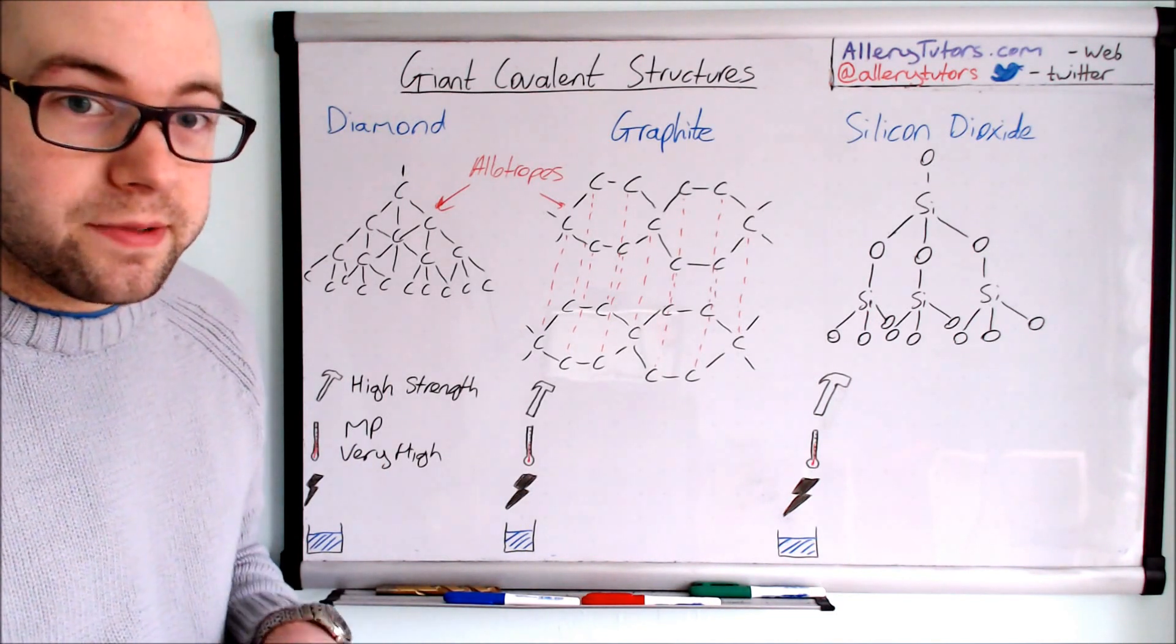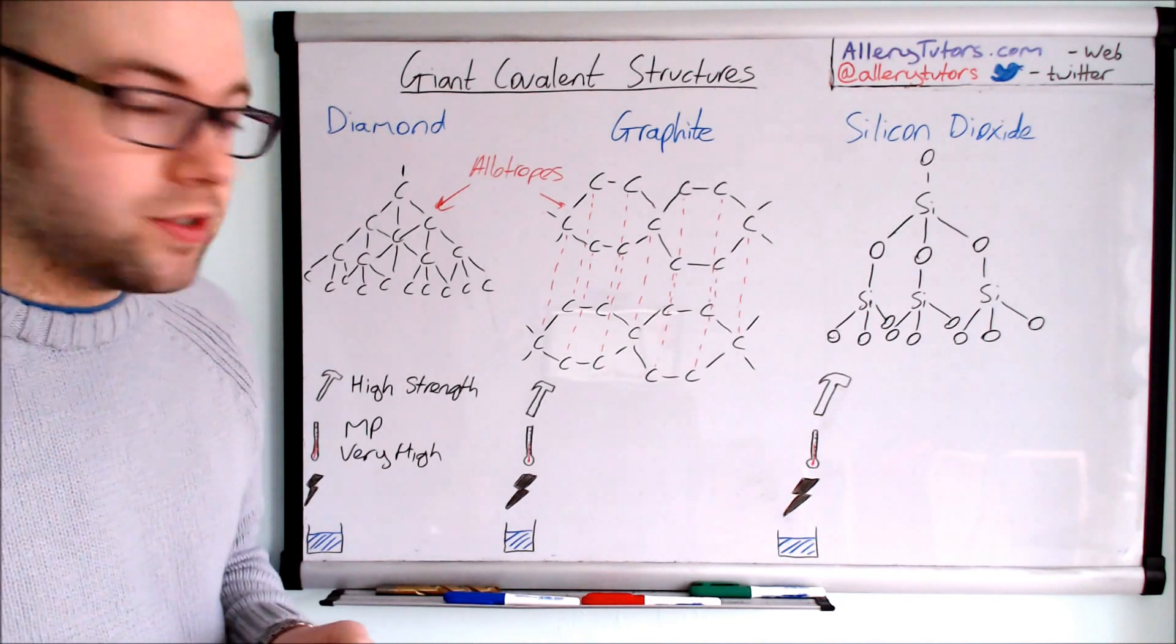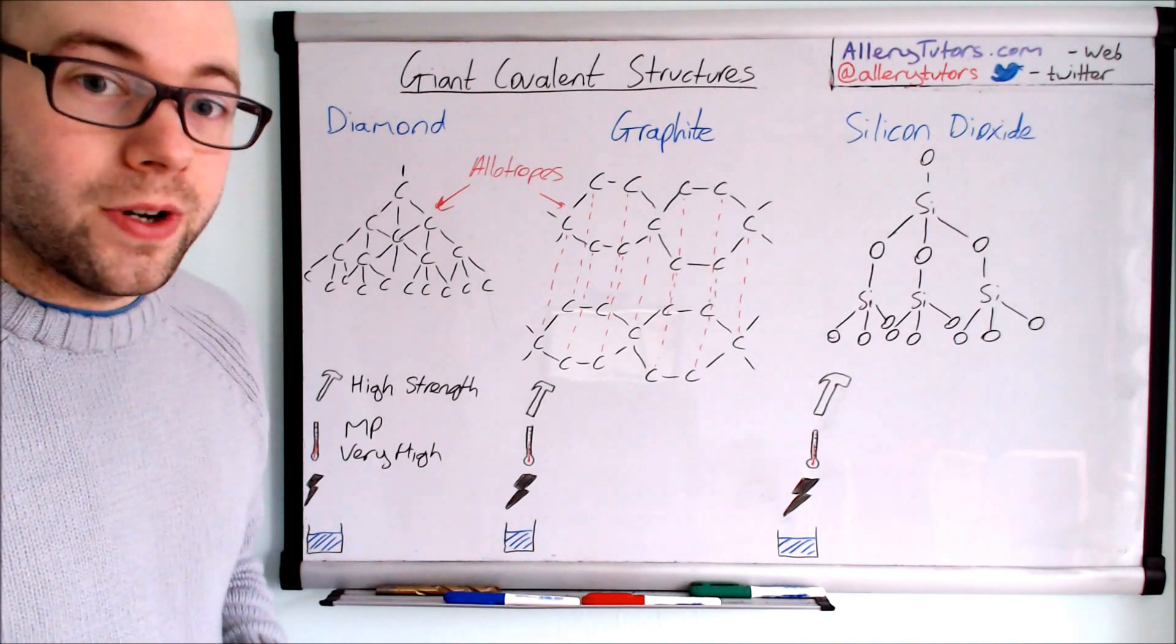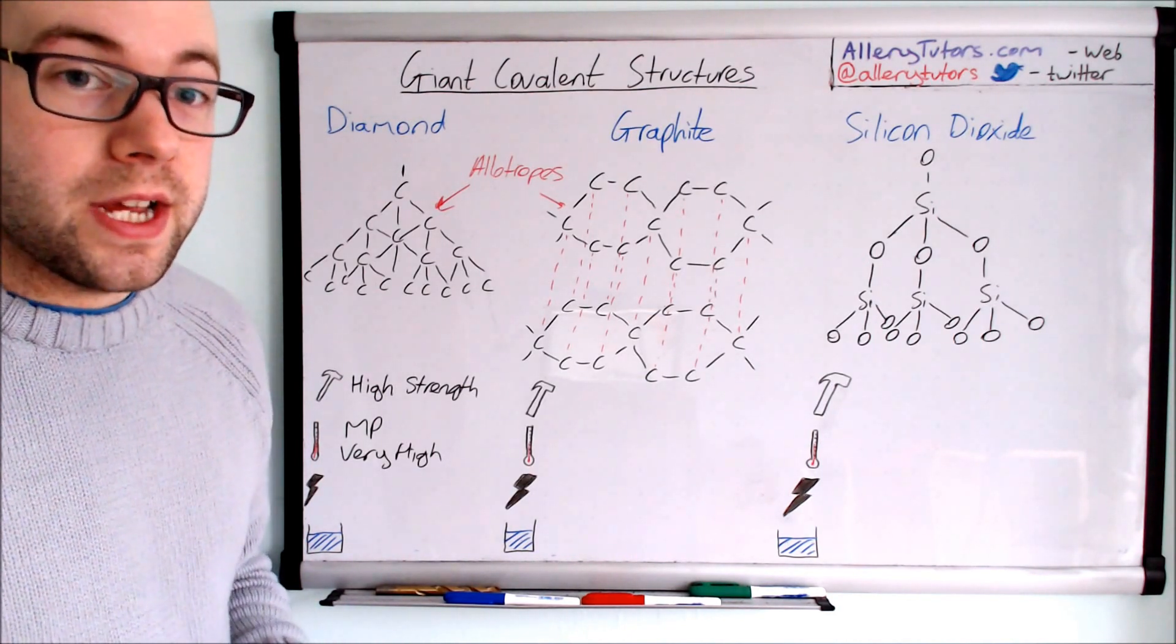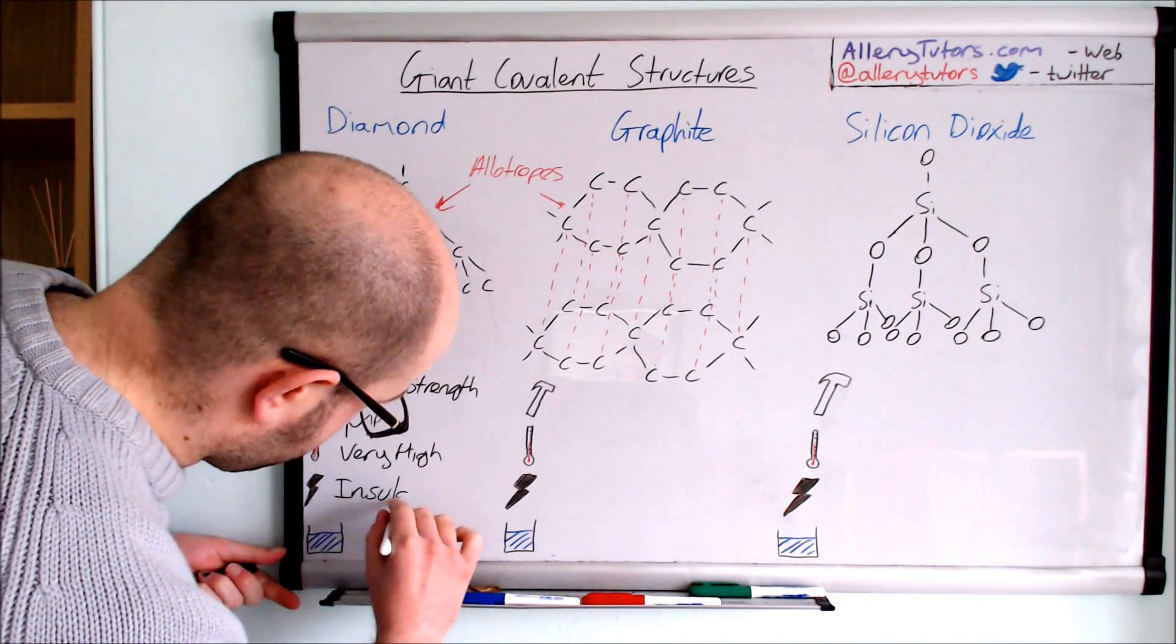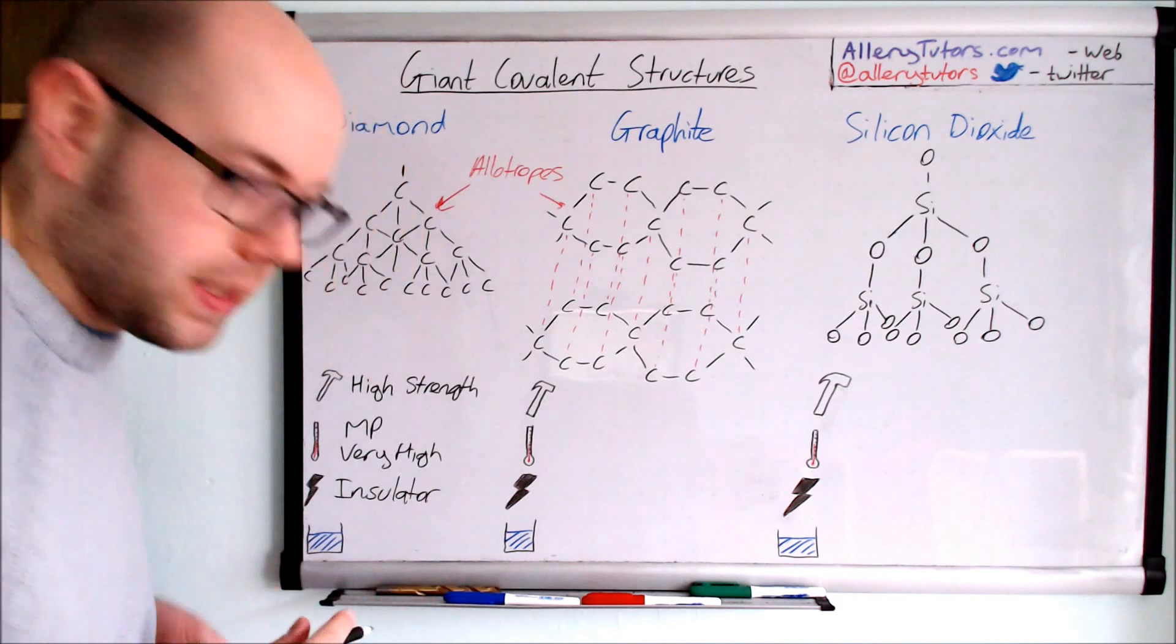Conductivity of electricity is the next one. Diamond doesn't conduct electricity. There's no free electrons in this structure. All the electrons are involved in bonding, so therefore it is an insulator.